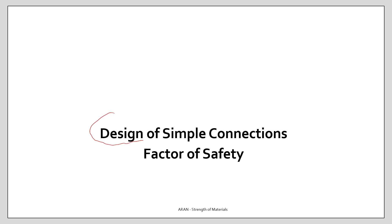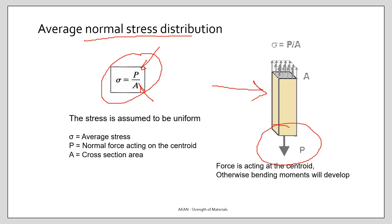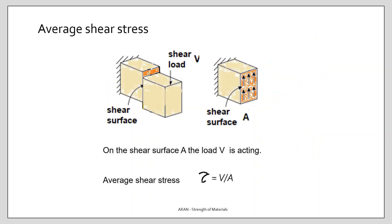In this video we will discuss the design of simple connections. We will use our basic knowledge about normal stress and shear stress, and discuss what factor of safety is and how to use it in our designs. Normal stress is defined as load divided by area. If you have a bar, the force acts at the centroid, and we assume a uniform stress distribution in the cross sections, so normal stress equals force divided by area.